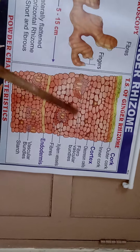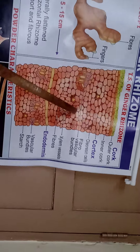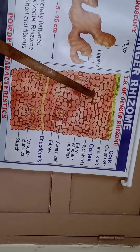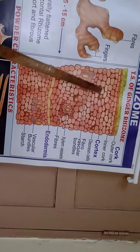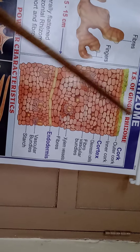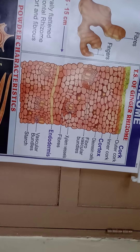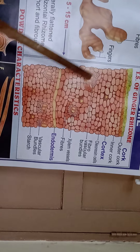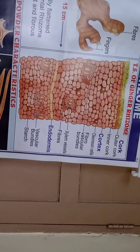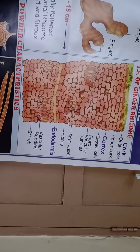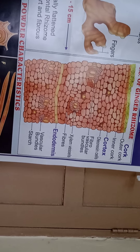The second part is the cortex region. In the cortex region there are isodiametric thin-walled parenchymatous cells with scattered fibrovascular strands. It also contains numerous idioblasts about 40 to 80 microns in diameter. Starch grains are also present in the cortex region. The starch grains are sac-shaped with a terminal beak-like projection where the eccentric hilum is present, and they are found in parenchymatous cells.